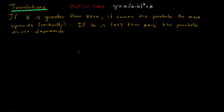So translations are moving vertically or horizontally. And so for those, we talk about h and k. So first of all, how about k?